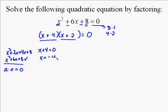Let x plus 4 equal 0. Then x is negative 4. Let x plus 2 equal 0. Subtract 2 from both sides. You get x equals negative 2.